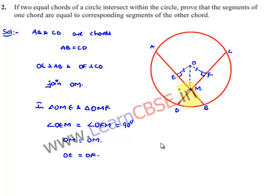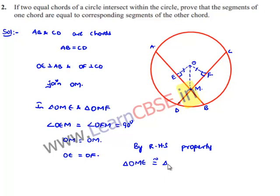Therefore, by the RHS congruency property, we can say that both triangles are congruent. That is, triangle OME is congruent to triangle OMF. Since the two triangles are congruent, their corresponding sides are equal. So we get ME is equal to MF.